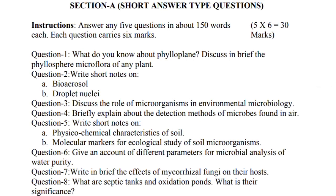In Section A there are a total of 10 questions and you have to attempt only 5 questions. Each question carries 6 marks. Question 1: What do you know about philoplane? Discuss in brief the phylosphere microflora of any plant.